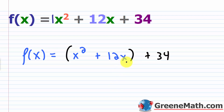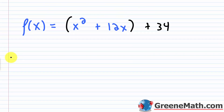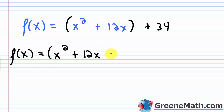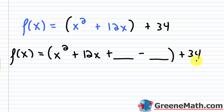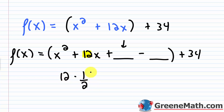Now I want to complete the square. I have f(x) = x² + 12x + [something] − [something] + 34. To find the missing term, take the coefficient of x — which is 12 — cut it in half, giving 6, and square it, giving 36. So I add 36 and subtract 36. Since 36 − 36 = 0, I haven't changed anything mathematically.